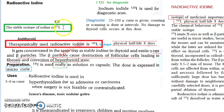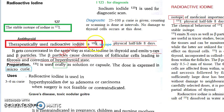Iodine's stable isotope is 127. If you want to use iodine for diagnosis, you can use iodine 123. But if you want it as an antithyroid drug, you have to use iodine 131.